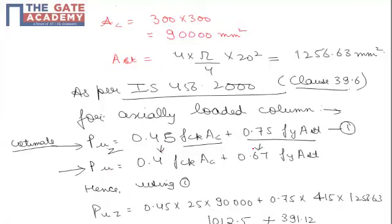But if we talk about the nominal load carrying capacity of column, this 0.45 is reduced to 0.4 and 0.75 is reduced to 0.67 FY AST. But in the question it is asked what is the ultimate load carrying capacity.